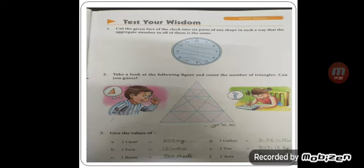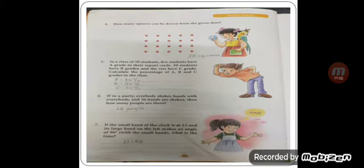Next, 1 carat equals 200 mg, which is from page number 74. Question number 4: how many squares can be drawn from given dots? By adding all these dots we can draw 20 squares. Question number 5: in a class of 50 students, 5 students have A grade, 20 students have B grade, and the rest have C grade. Calculate the percentage. We calculated: A grade students are 10 percent, B grade is 40 percent, and C grade is 50 percent.